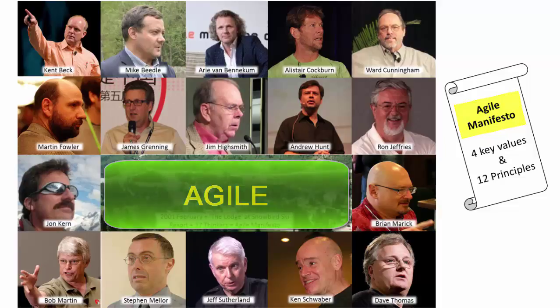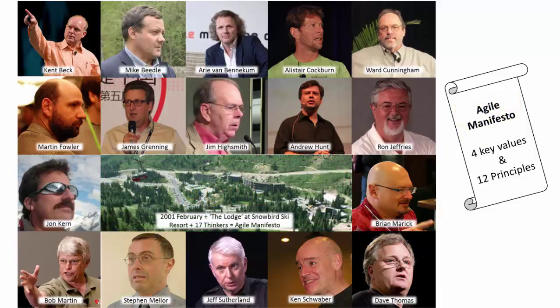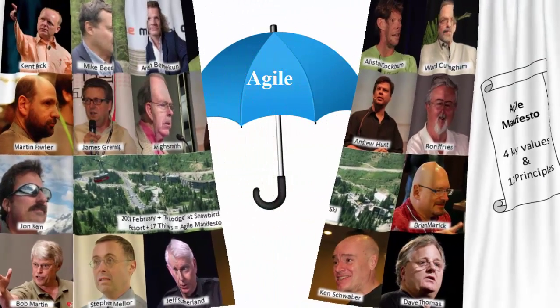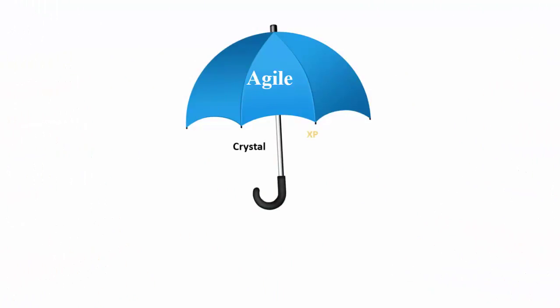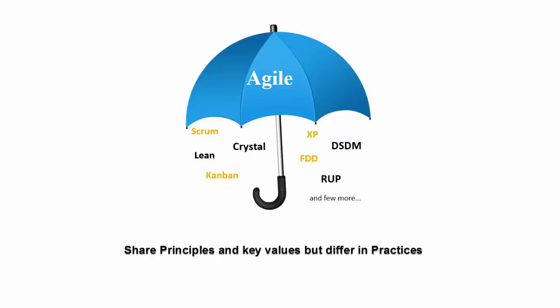Agile is actually nothing new — it is a meta-model based on best practices from previous models like waterfall, iterative and incremental, and rapid application development. We can say agile always existed but was not formally structured. In other words, agile is an umbrella term given to various methodologies which share the same principles and values, but may differ in practices. In this series, I will explain more about Scrum, XP, Kanban, and some basics of FDD.